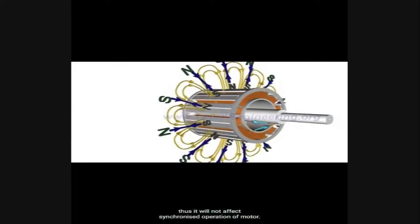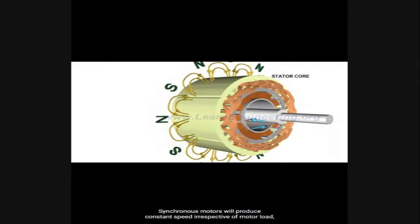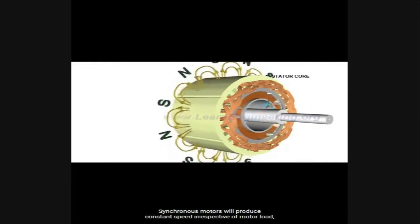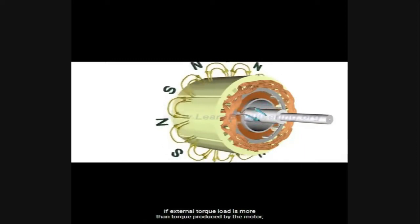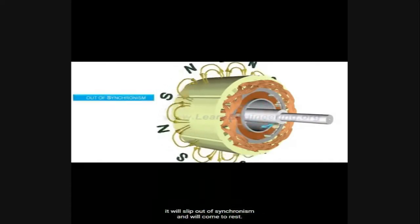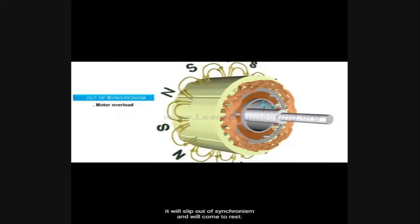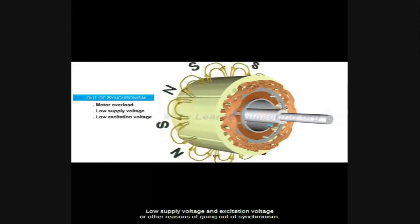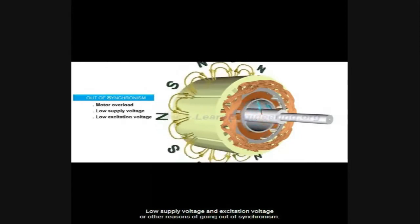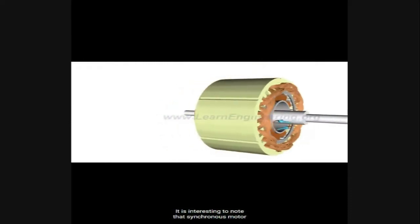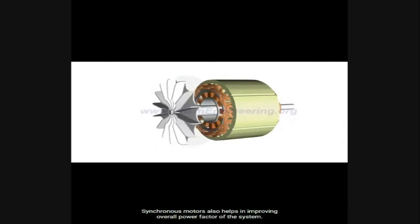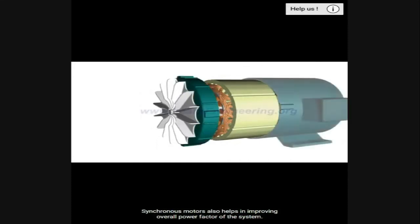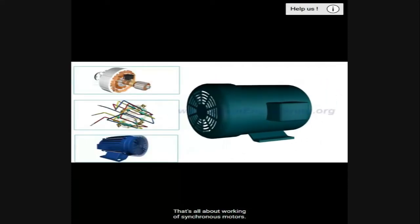Synchronous motors produce constant speed irrespective of motor load, as long as the load is within the motor's capability. If the external torque load exceeds the torque produced by the motor, it will slip out of synchronism and come to rest. Low supply voltage and excitation voltage are other reasons for going out of synchronism. Notably, a synchronous motor has the same constructional features as an alternator, and it also helps in improving the overall power factor of the system.